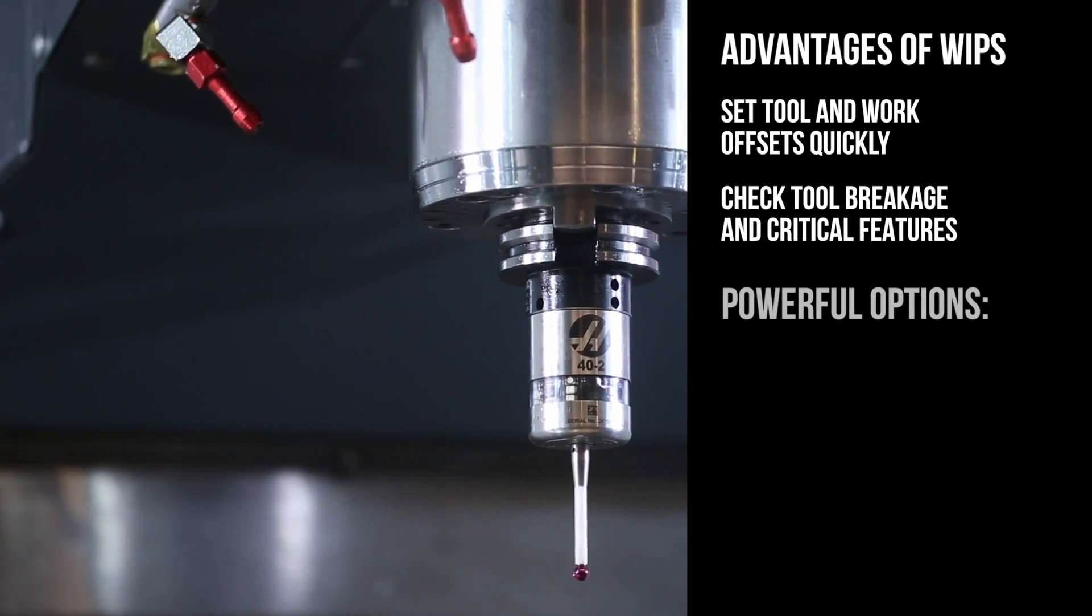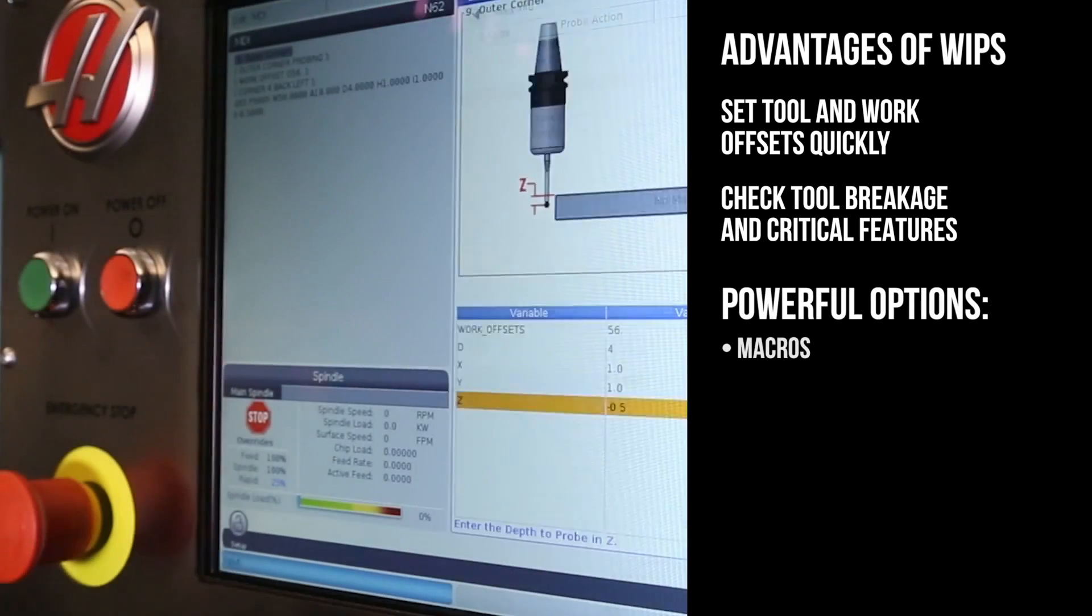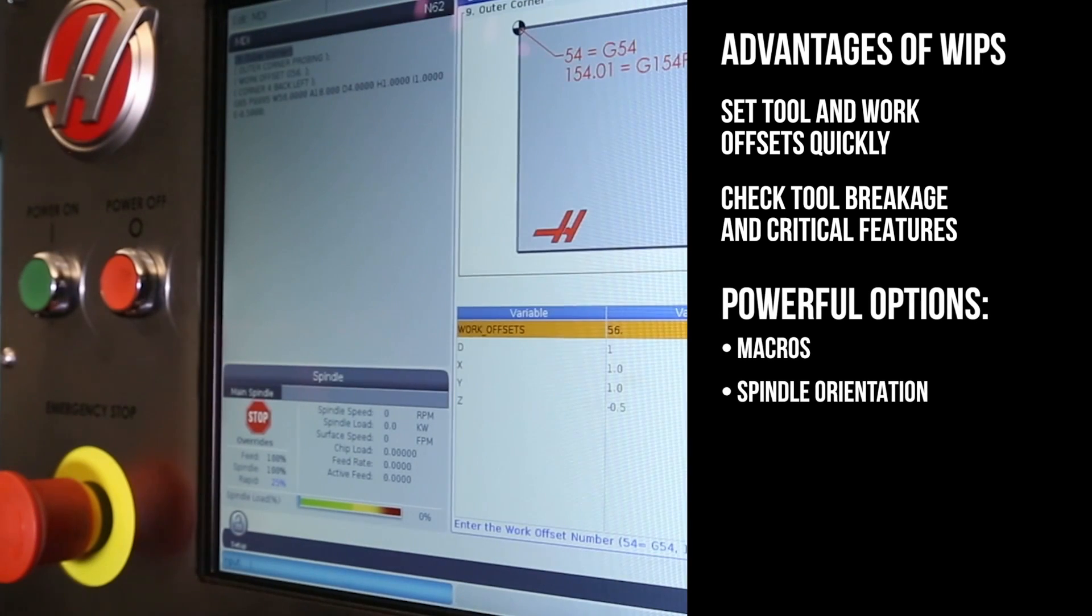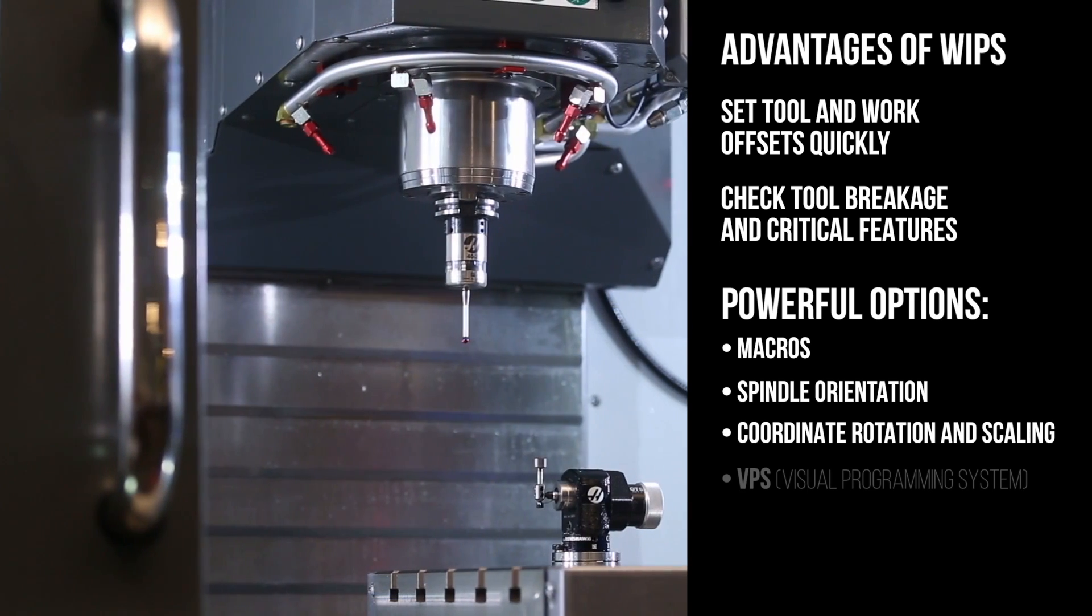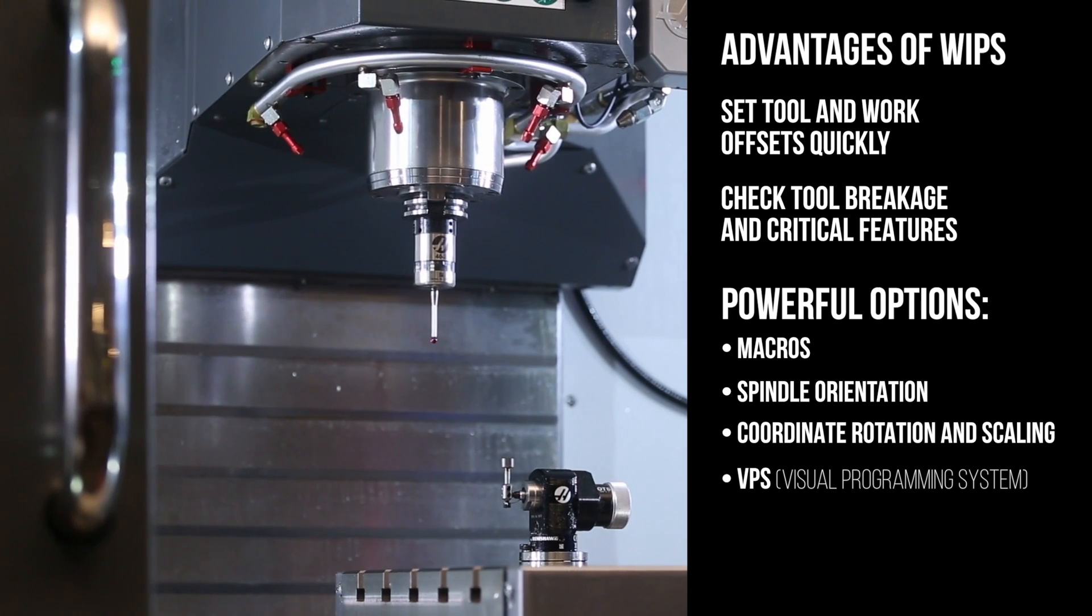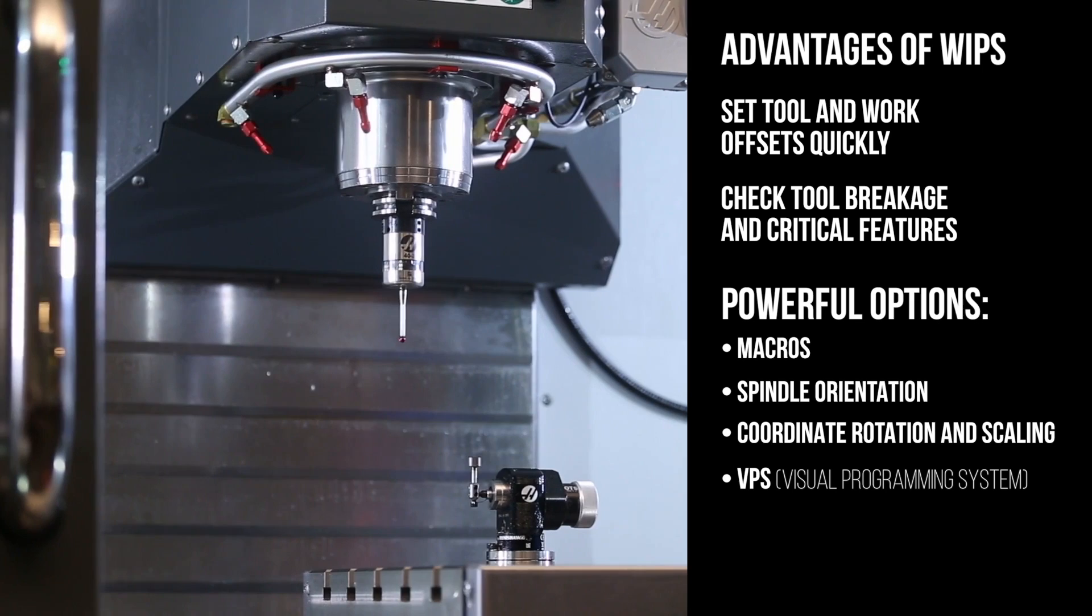And WIPS comes with four powerful options: macros, spindle orientation, coordinate rotation and scaling, and VPS, Haas' visual programming system. All included.